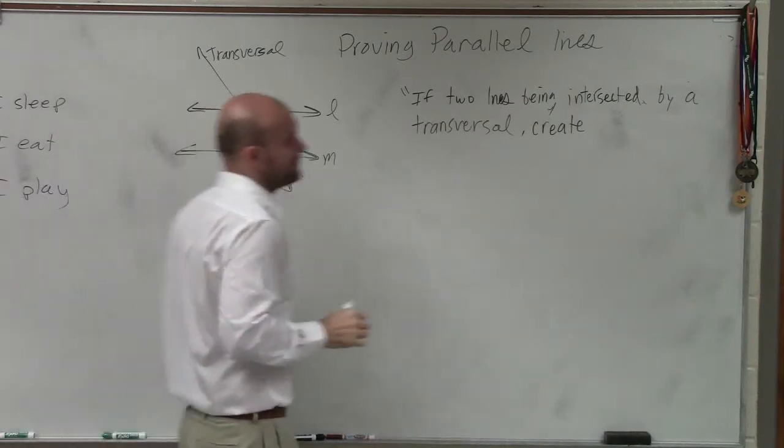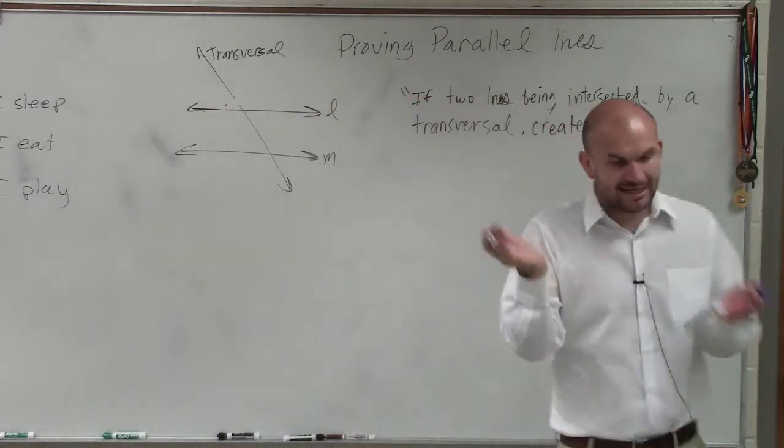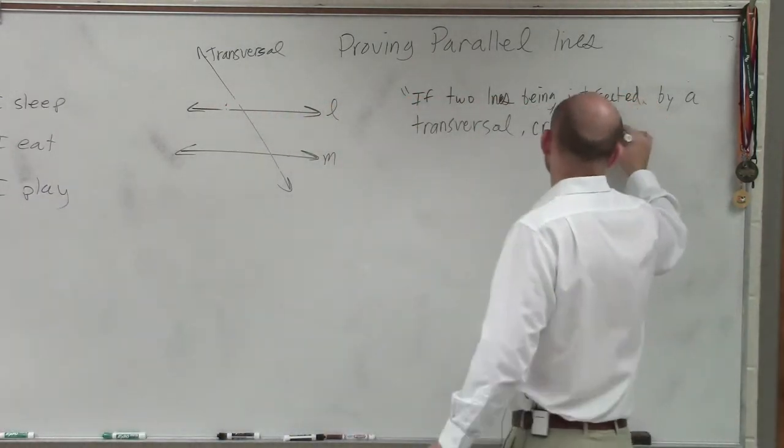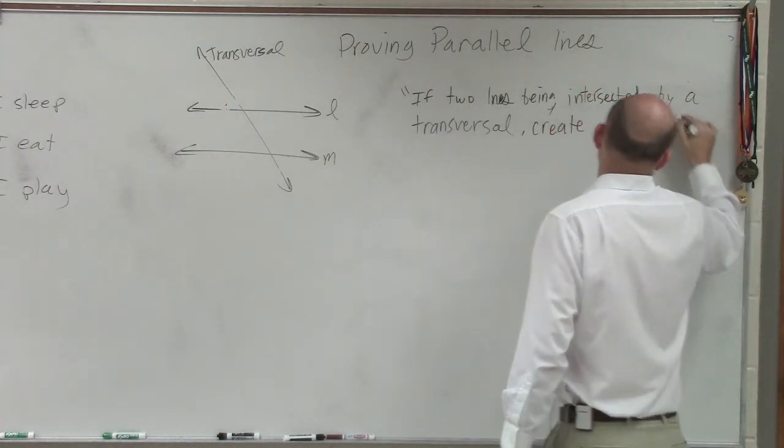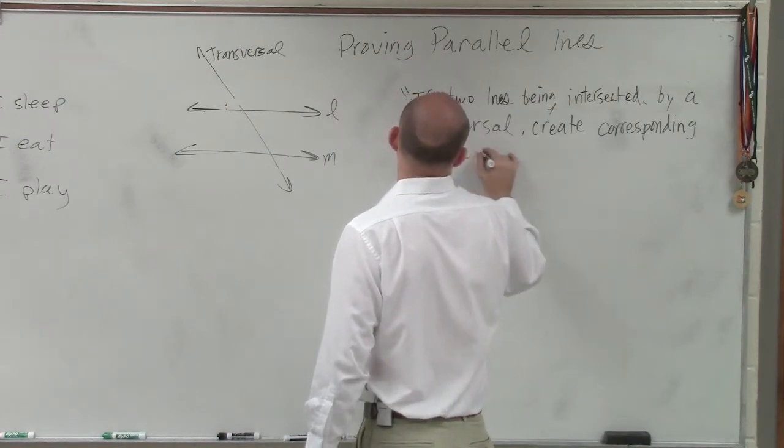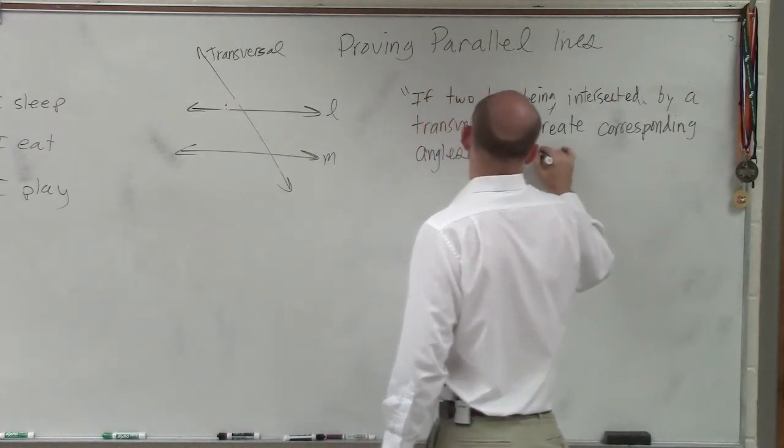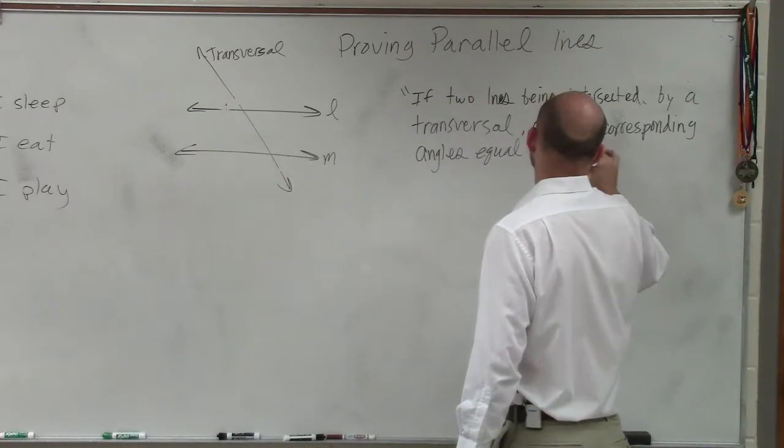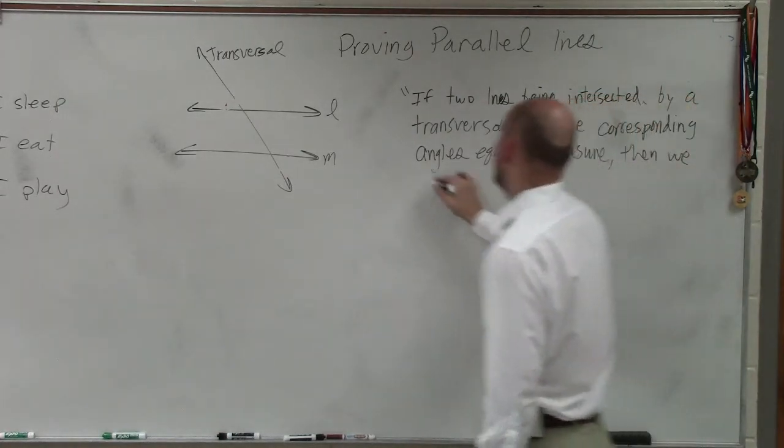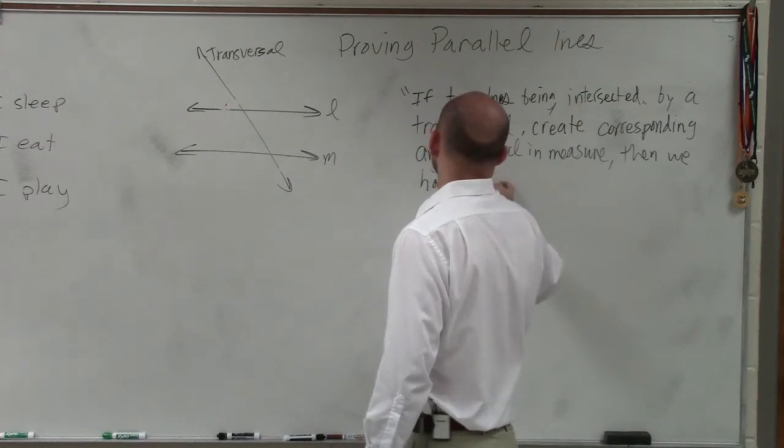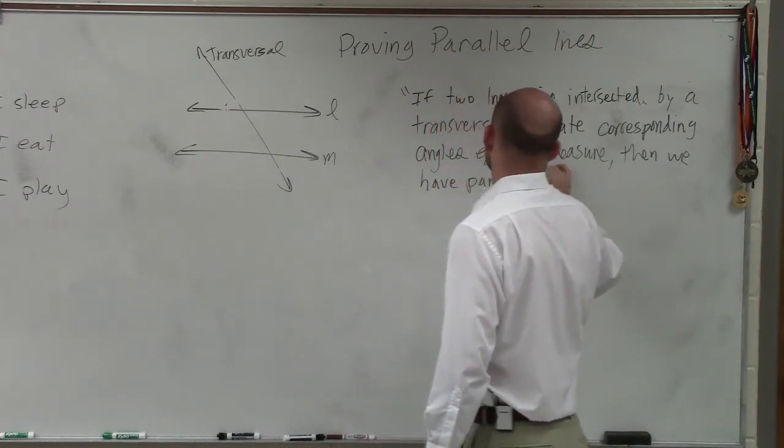So last one, if you have two lines that are being intersected, and they create corresponding angles that are equal in measure, that means congruent, then we have parallel lines, right?